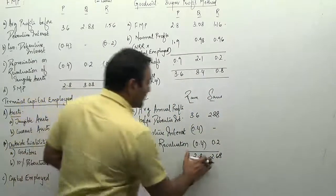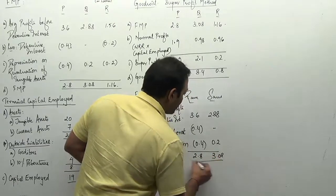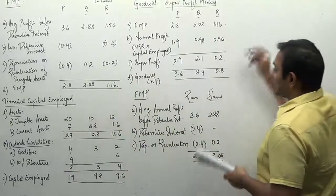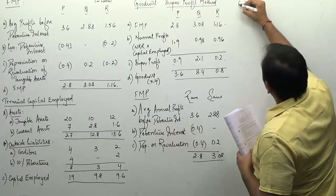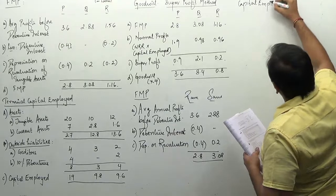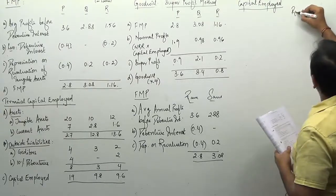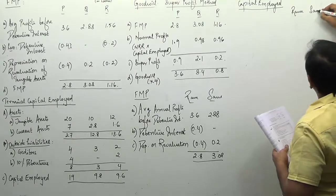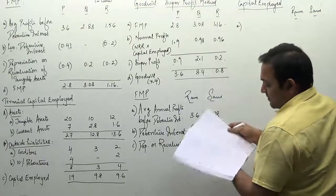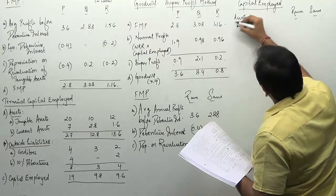Rewriting the FMP figure as 3.08. Now move to capital employed — terminal capital employed. Maintain two columns for Ram and Sam.